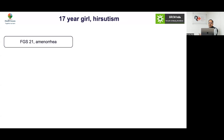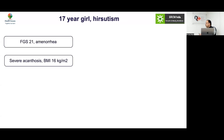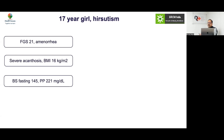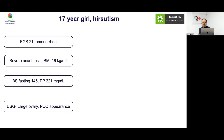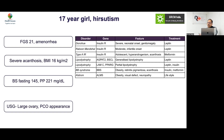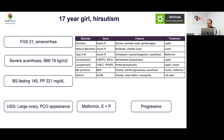Case: A 17-year-old lean girl with hirsutism, free androgen score of 21, amenorrhea, severe acanthosis, and diabetes. Ultrasound shows a large ovary with PCO appearance — hyperandrogenism with a lean individual. This is a milder form of genetic diabetes, likely insulin receptor-related. Metformin, estriol, and progesterone may result in improvement.